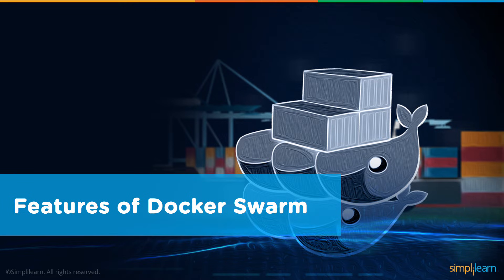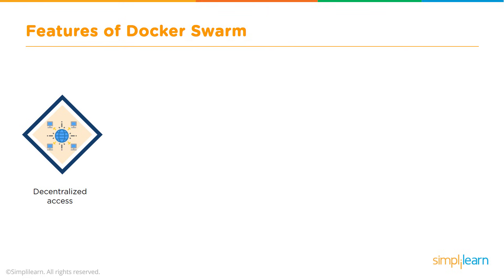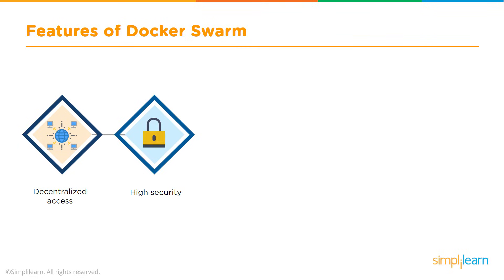A key feature of Docker Swarm is that it is fully decentralized, which makes it very easy for teams to access and manage the environment. The communication between the manager and client nodes within the Swarm is highly secure — this is a fundamental requirement for any solution, and it's good to know Docker Swarm has that built in.